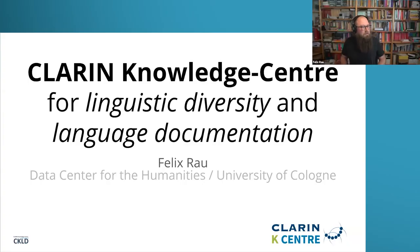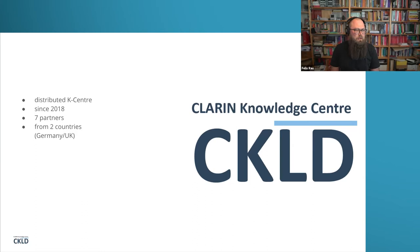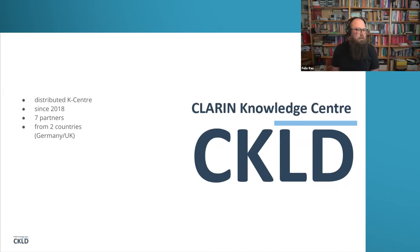I'm here for the CLARIN Knowledge Center for Linguistic Diversity and Language Documentation, the CKLD. The CKLD is a distributed competence center that has been in existence since 2018. We are a joint center of seven partners from two countries — mostly Germany but also the UK. We joined forces as six partners to start the center, and then later the seventh partner joined.